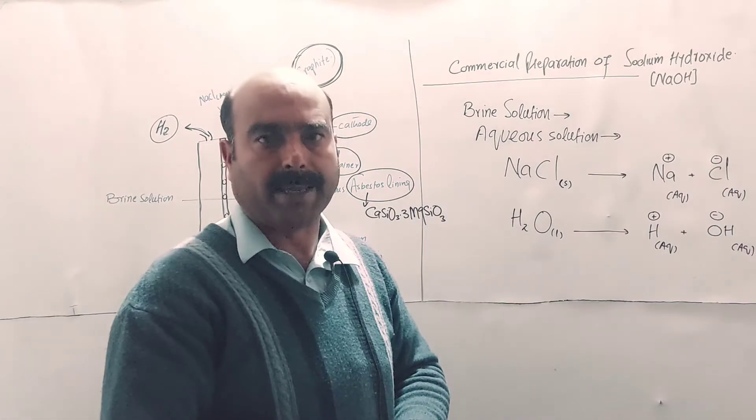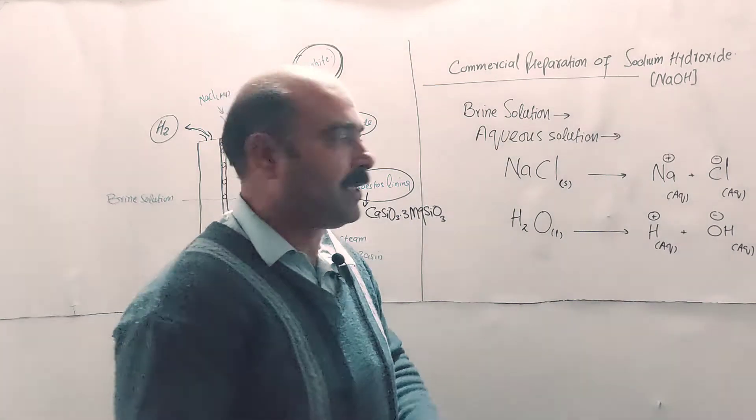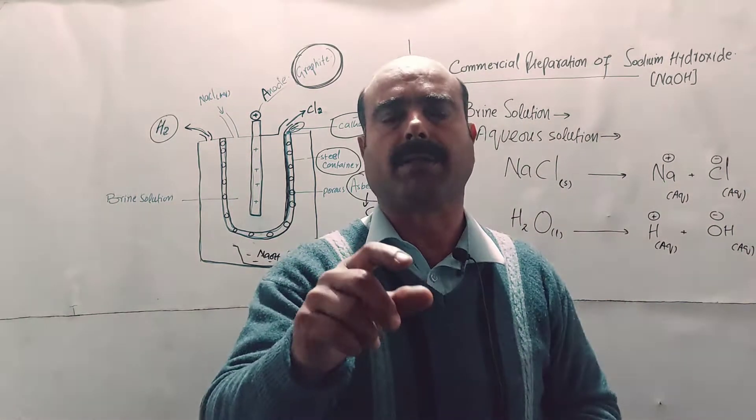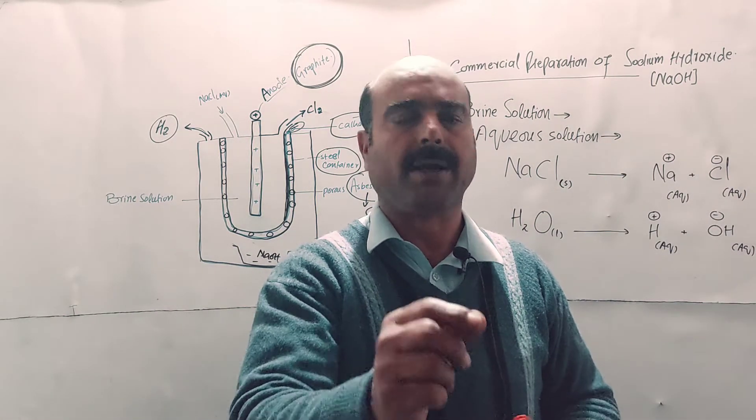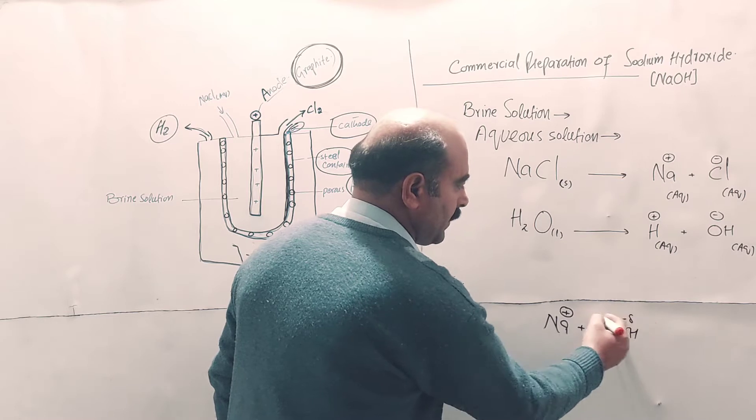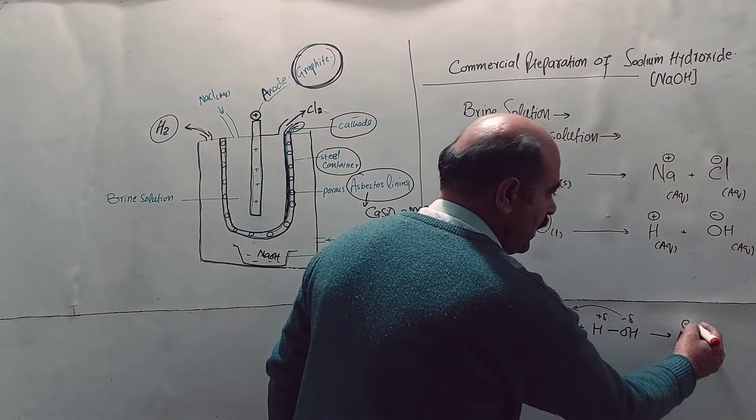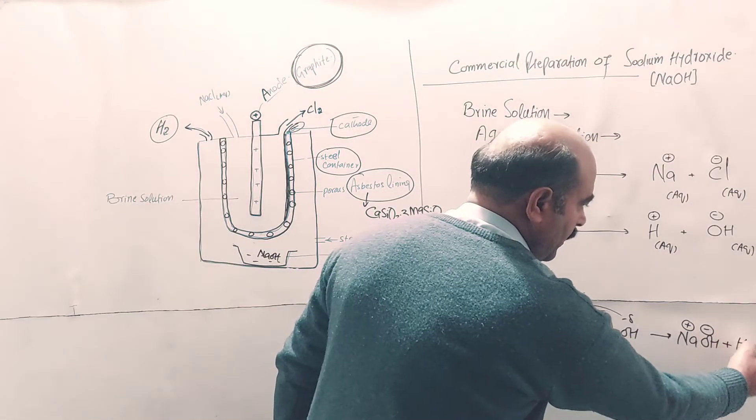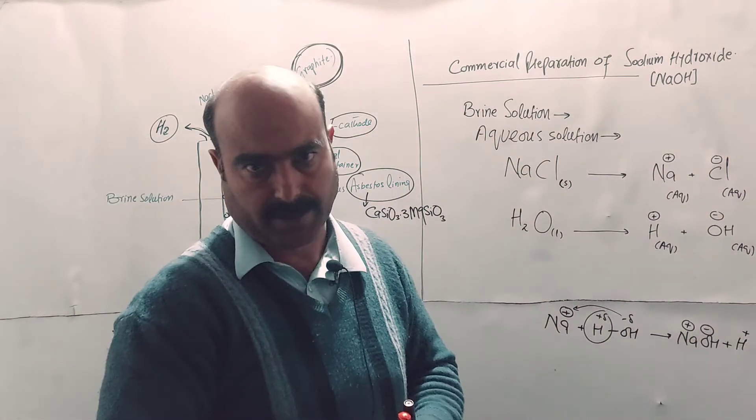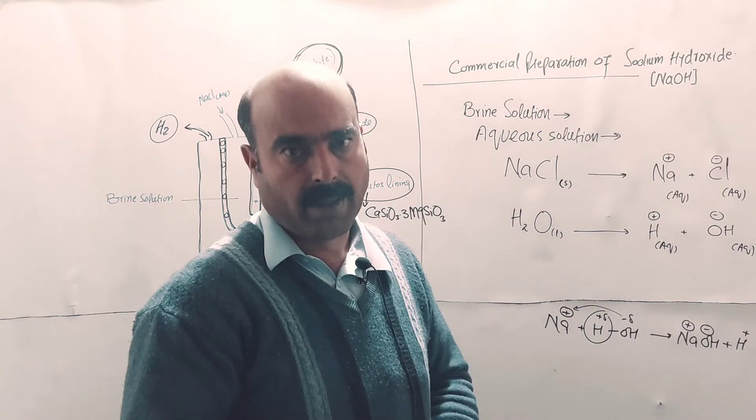Sodium chloride in water ionizes into sodium ions and chloride ions. These ions will be in solution. A little bit of water also undergoes ionization to produce hydrogen ions and hydroxide ions. The bond between hydrogen and oxygen breaks due to the polarity of water and the presence of sodium ions.